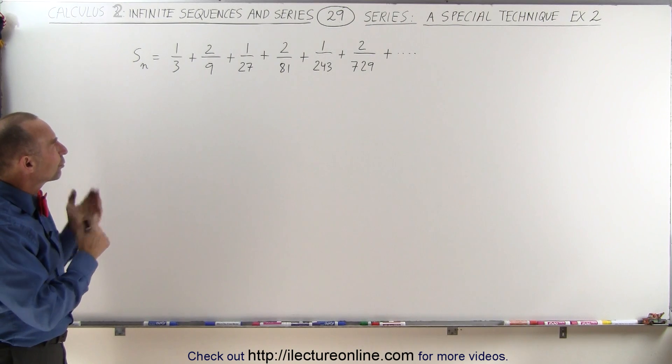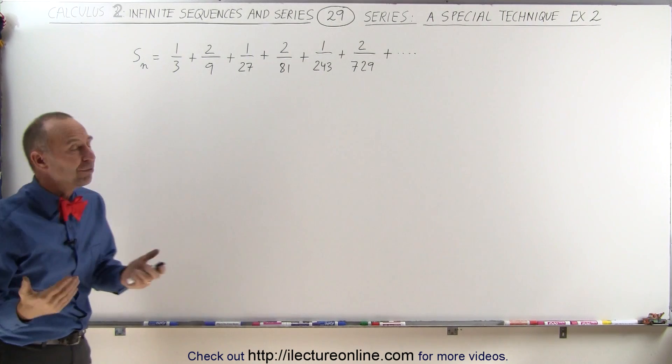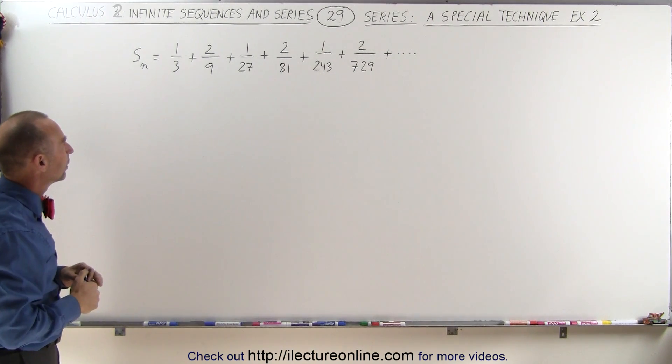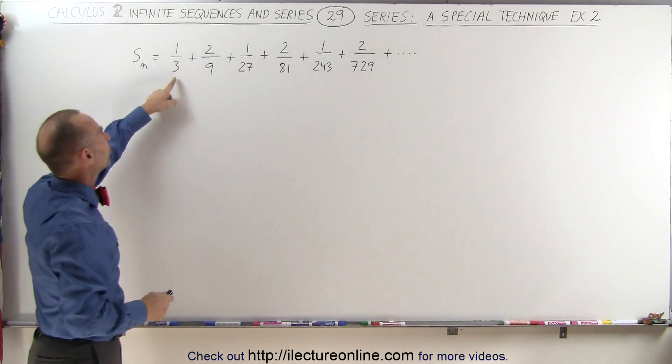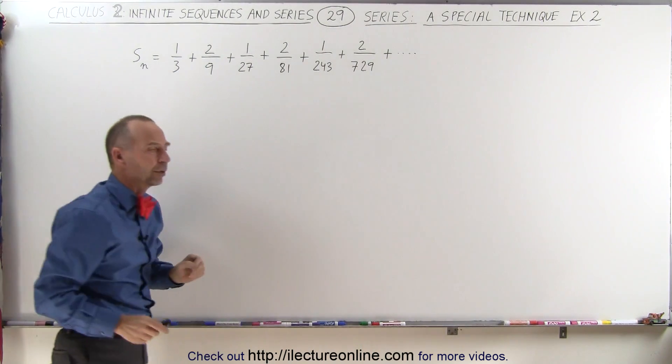First, what we're going to do is recognize that every odd term has a 1 in the numerator and every even term has a 2 in the numerator. You can also see that the denominators increase by a factor of 3: 3, 9, 27, 81, and so forth.